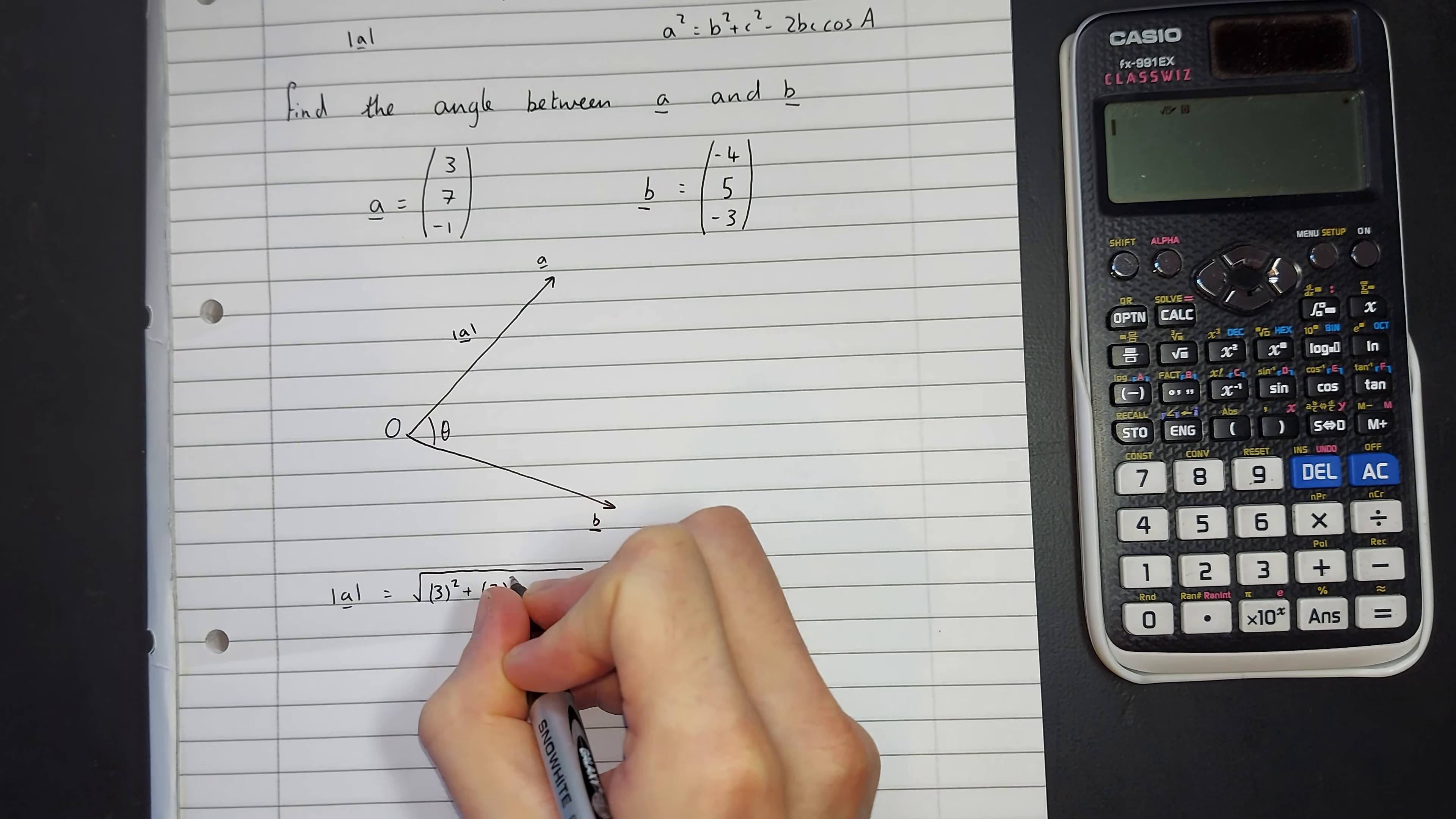Let's find this value here, which is the magnitude of B. So, to find the magnitude of B, we're going to follow the same steps. We've got negative 4 squared plus 5 squared plus negative 3 squared. Square root of all of that, we get 16 plus 25 plus 9, 50. 50 is 25 times 2, which is 5 root 2. So this here is going to be 5 root 2.